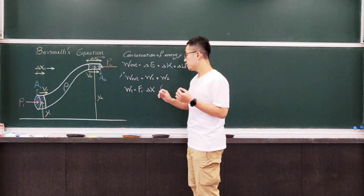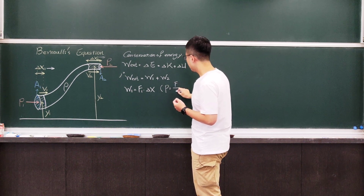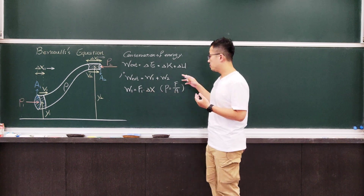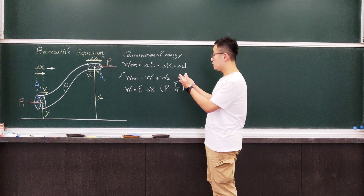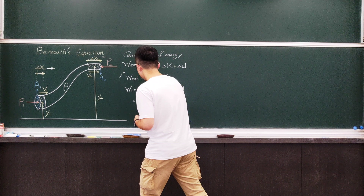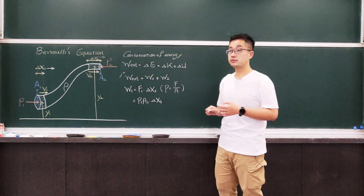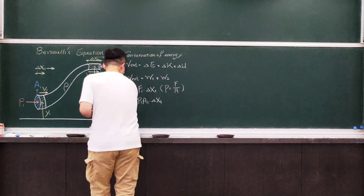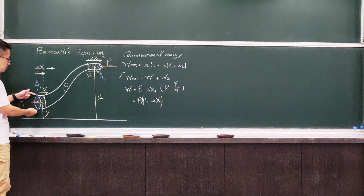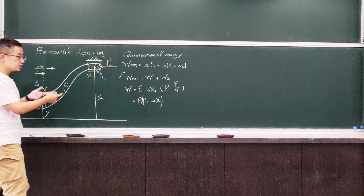According to the definition, pressure P is force per area. So F can be expressed as pressure P times the cross-sectional area. I can change F1 to P1 times A1 times delta x1. Look at A1 times delta x1 — A1 is the cross-sectional area multiplied by its width, which means this is the volume of the small portion.